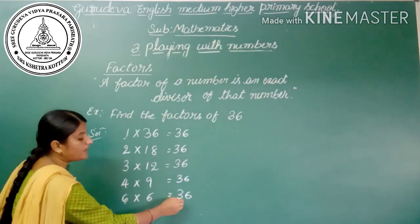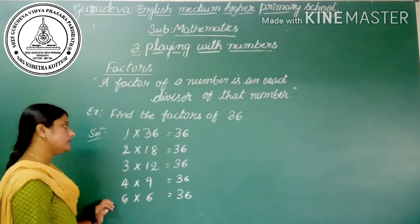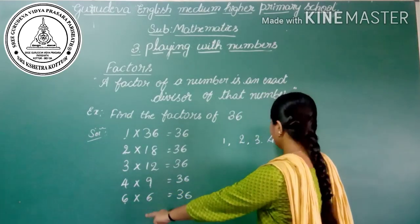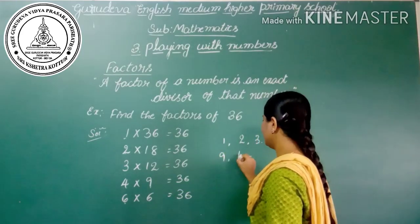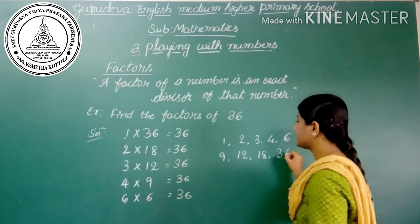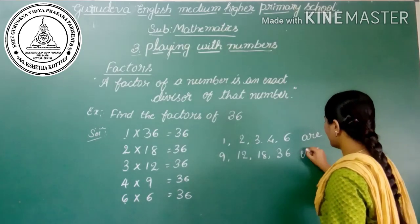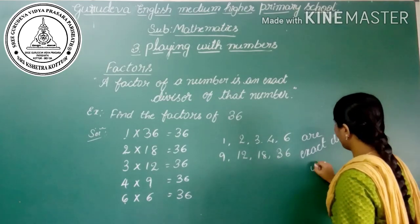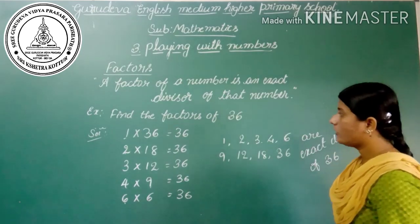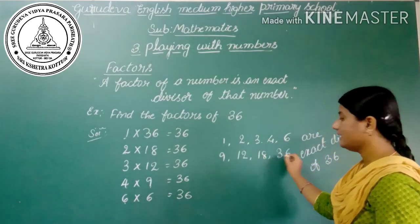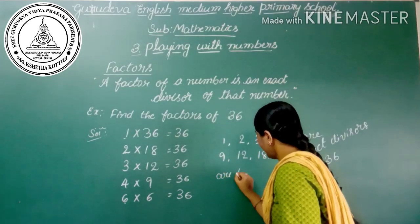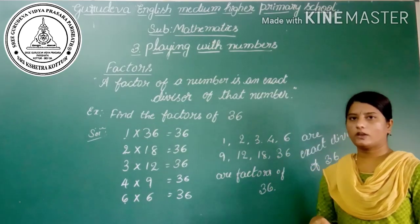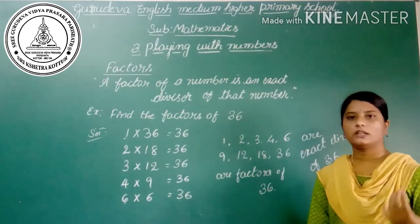So we can say that 1, 2, 3, 4, 6, 9, 12, 18, and 36 are the exact divisors of 36, and we can also call them factors of 36. In this way, you can find out the factors of any given number.